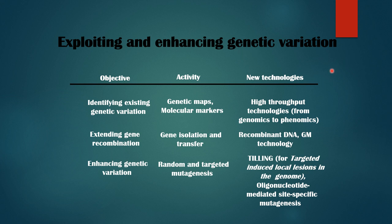This topic is further divided into objective, activity, and new technologies. The first objective is identifying the existing genetic variation. To complete this objective, we do activities like genetic mapping and molecular markers, using high-output technology from genomics to phenomics.